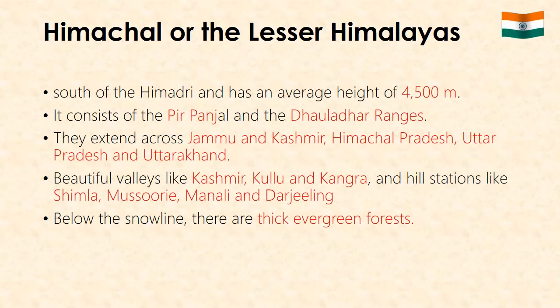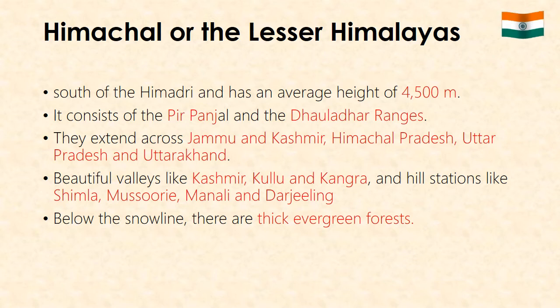Himachal, or the Lesser Himalayas, lies to the south of the Himadri and has an average height of 4,500 m. It consists of the Pir Panjal and the Dhauladhar ranges. They extend across Jammu and Kashmir, Himachal Pradesh, Uttar Pradesh and Uttarakhand. Among these ranges are some beautiful valleys like Kashmir, Kullu and Kangra, and hill stations like Shimla, Mussoorie, Manali and Darjeeling.